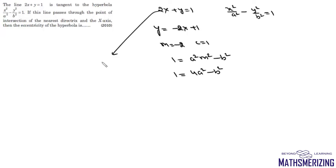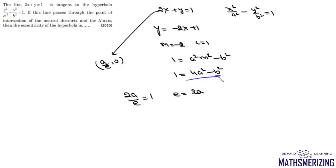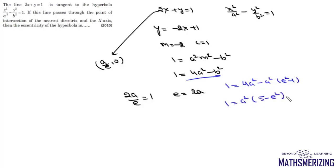This line passes through the point of intersection of the nearest directrix with the x-axis, i.e., through (a/e, 0). Substituting: 2(a/e) = 1, so e = 2a. Since b² = a²(e²-1), the tangency condition becomes 1 = a²(5 - e²), and substituting a² = e²/4 gives 4 = e²(5 - e²).